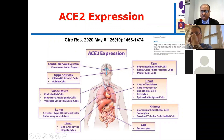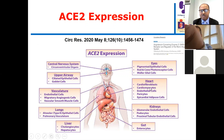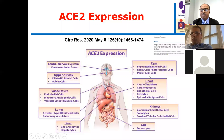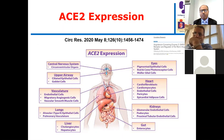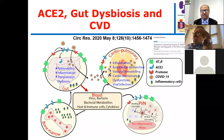ACE2 is also protective for the heart — it is expressed in cardiac fibroblasts, cardiomyocytes, endothelial cells, pericytes, epicardial adipose cells, and even in the eyes. ACE2 is a very important protective pathway that guards body systems from the harmful effects of excess angiotensin-2 and protects against inflammation and fibrosis.